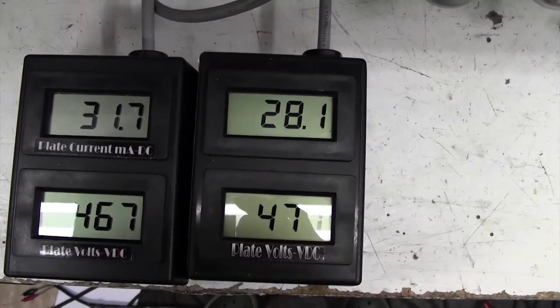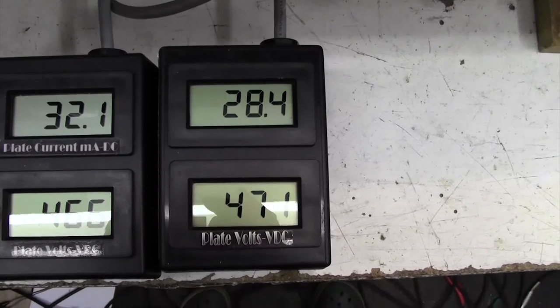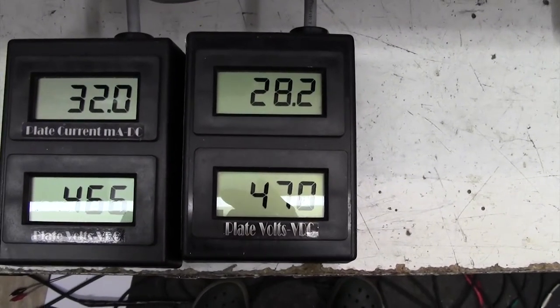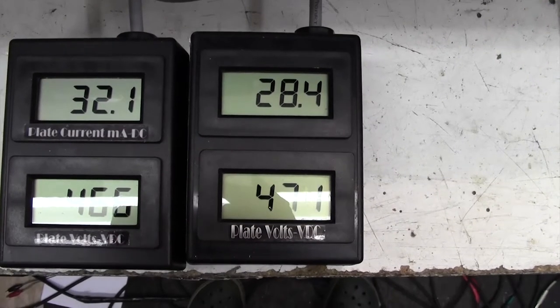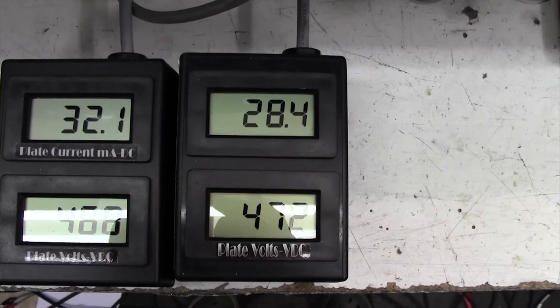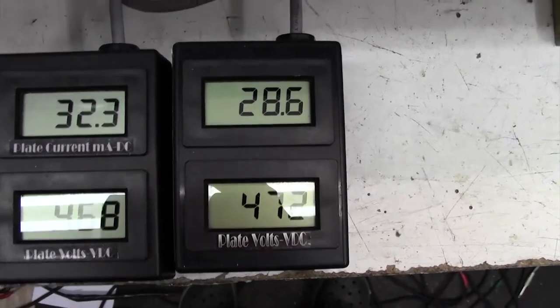I'm aiming for 40 milliamps, and now I'm maxed out on the pot. So we have 32 milliamps on one valve, 28 on the other. What that means is they're not a closely matched pair, but that's good enough. I wouldn't worry about that. But we don't have enough travel on our bias pot. So let me show you what to do if that happens to you.